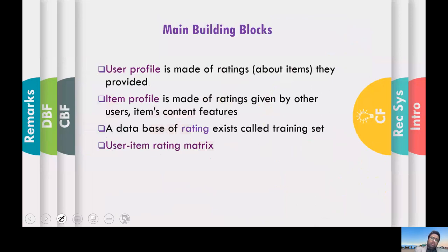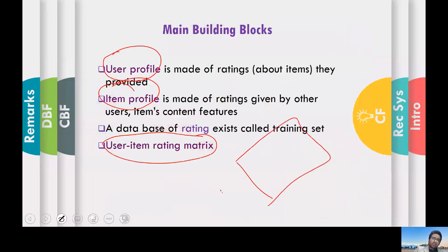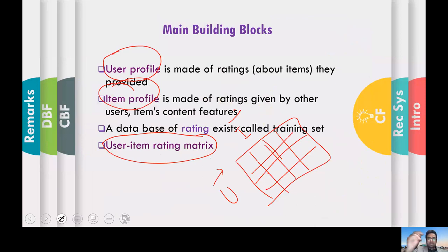To find the similar user you have their profile in the database and can match them easily. From here: you have a user profile, an item profile, and a rating matrix. Usually it looks like this — users on one side, items on the other, and a matrix with the ratings.